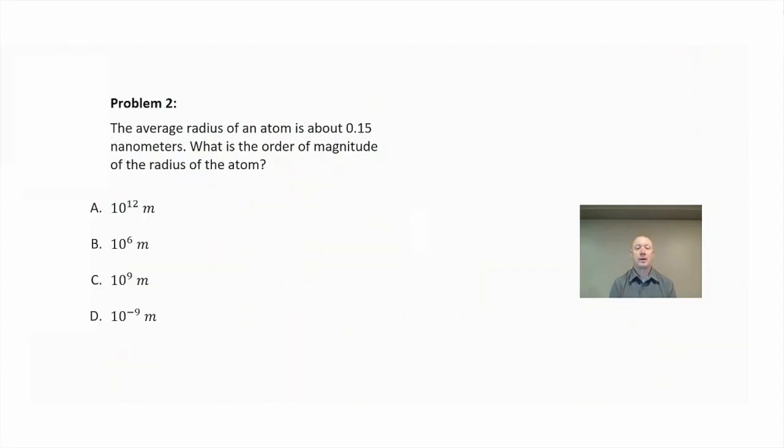Problem two: The average radius of an atom is about 0.15 nanometers. What is the order of magnitude of the radius of the atom? All right. So when we talk about order of magnitude, we're talking about size. In this case, we're starting out in nanometers.